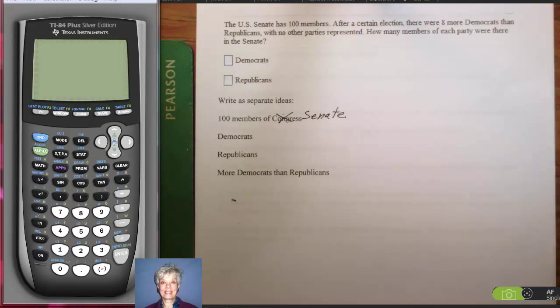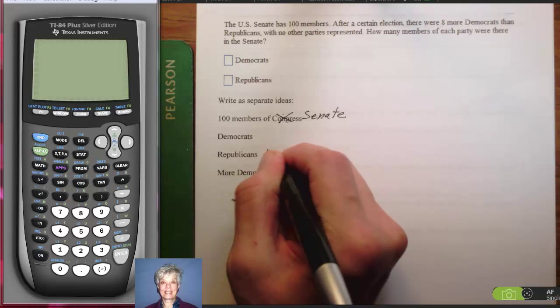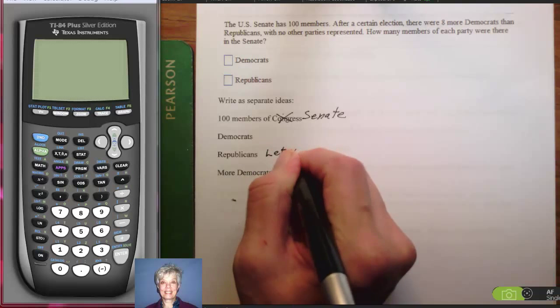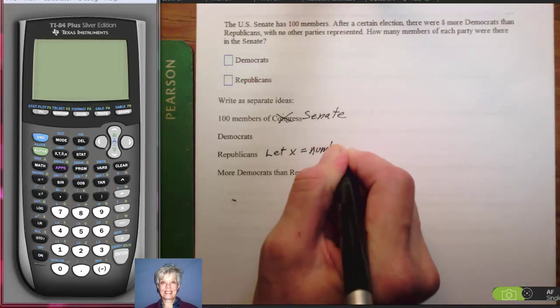Well, we're told in here that there are eight more Democrats than Republicans. So notice that the number of Democrats is based on the number of Republicans, eight more than the number of Republicans. How many Republicans are there? I don't know. So I am going to let X equal the number of Republicans.